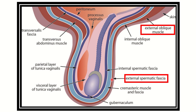We can see the different layers of the scrotum. First of all, we can see the skin. Then this is the external oblique aponeurosis. Then we can see the internal oblique muscles. Then this is the transversalis abdominis muscle. Then we can see the parietal layer of the tunica vaginalis and the visceral layer of the tunica vaginalis. So this is the layers of the scrotum.